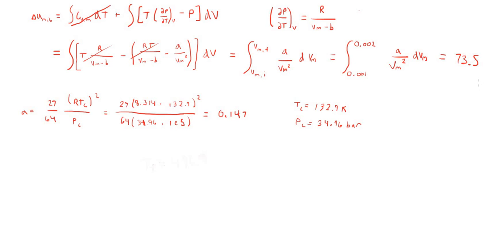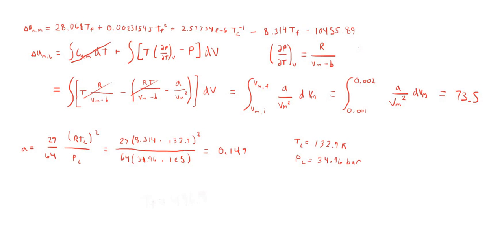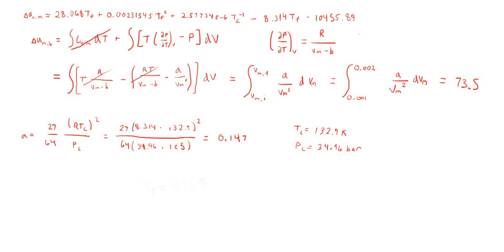Now we have everything needed to find the final temperature. Setting ΔU_A + ΔU_B = 0, we add 73.5 and the integral expression for step A, set equal to zero, and use an equation solver such as Wolfram Alpha to get Tf = 496.7 Kelvin.